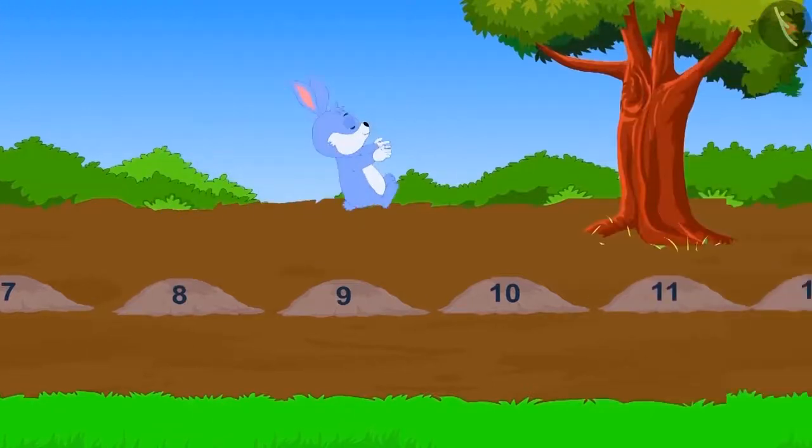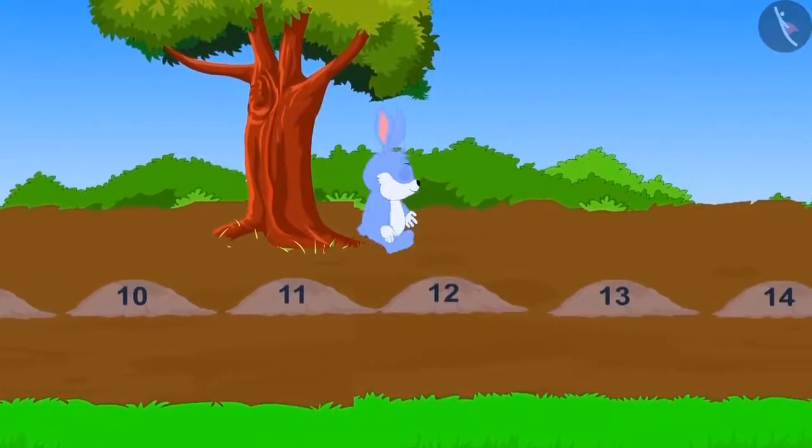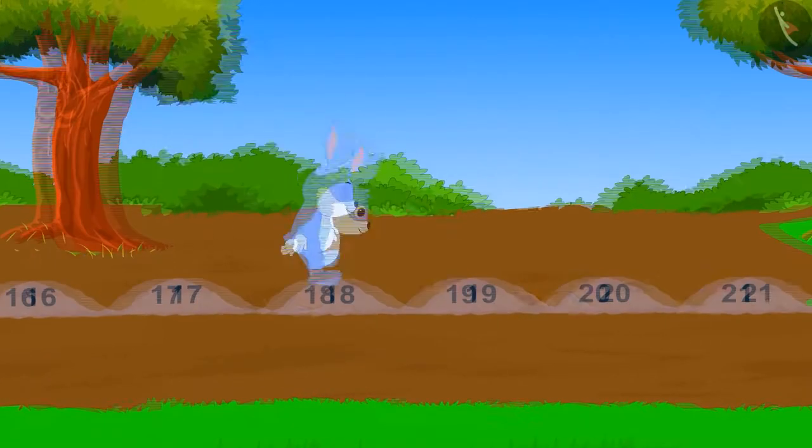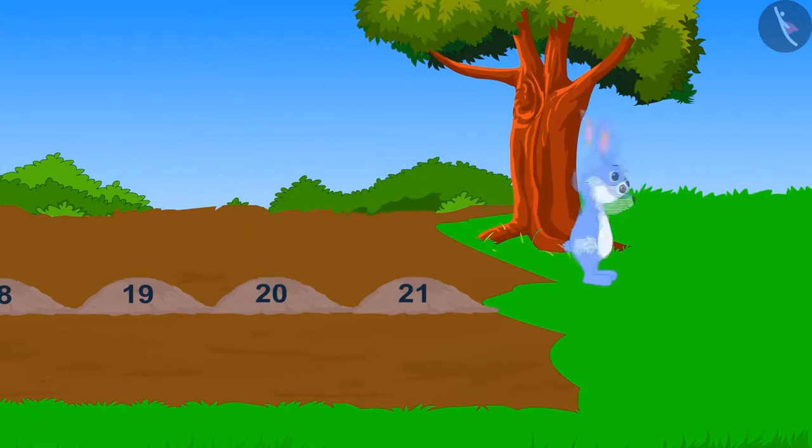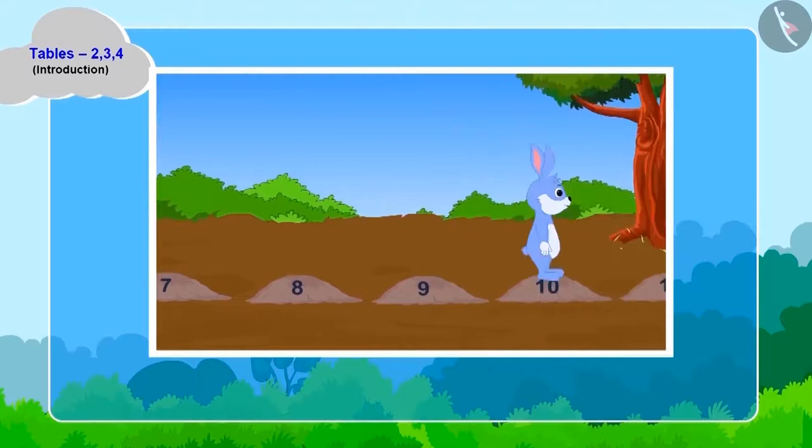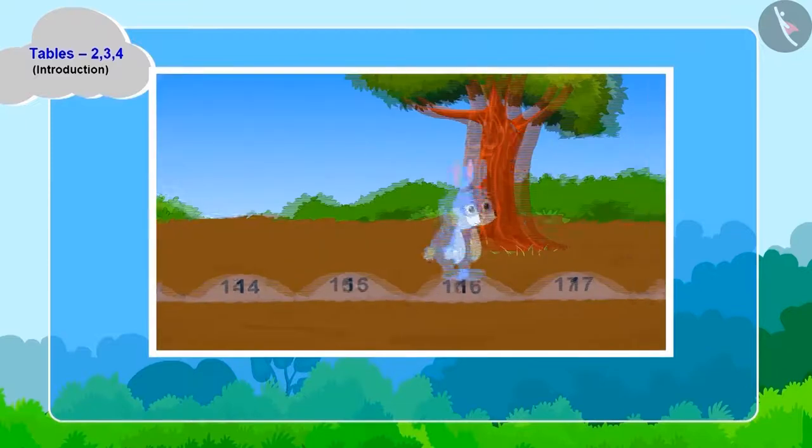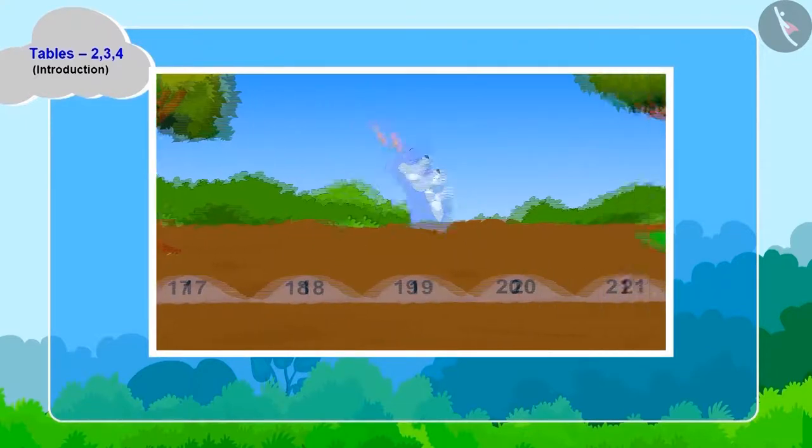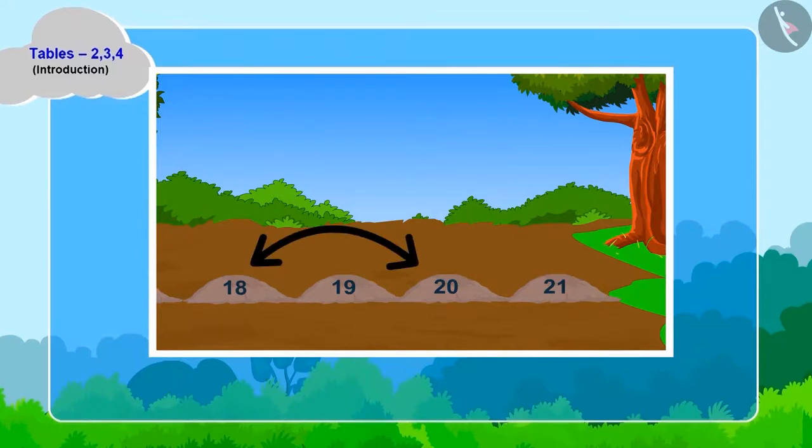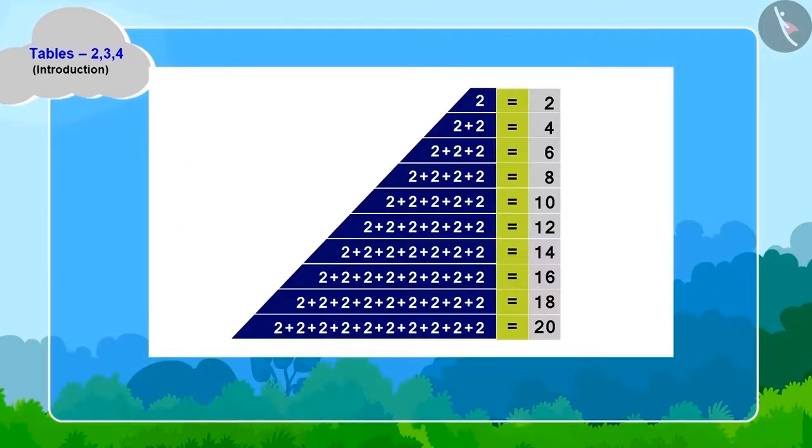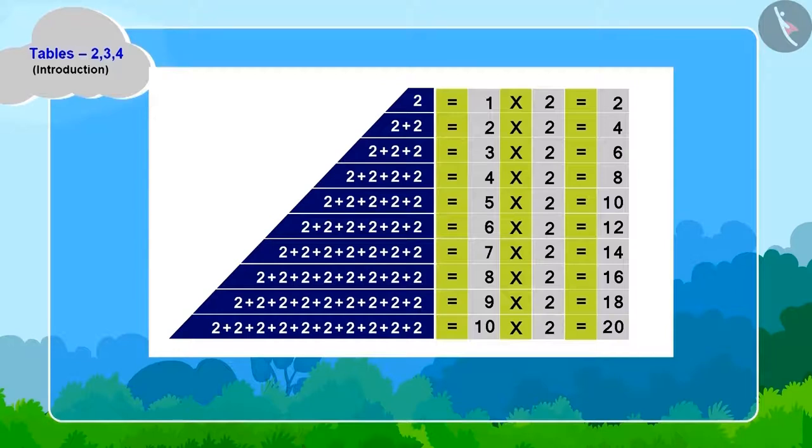This way, jump after jump, bunny moved two steps ahead in every jump and in the end crossed over to the other side of the swamp from the twentieth stone. Children, do you find something unique in bunny's jumps? Two is being added to every jump of bunny. And what did we learn in the previous lesson? Repeated addition can also be written in the form of multiplication.